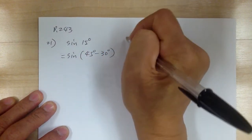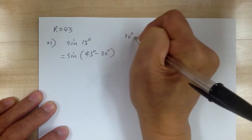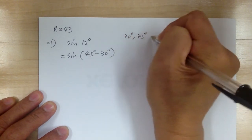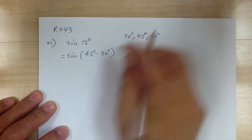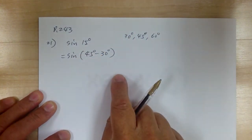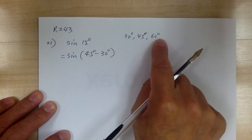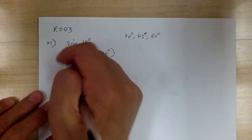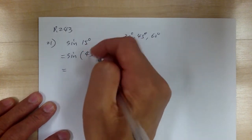You want to use a combination of the angles that you know, which are the 30s, the 45s, and the 60s. So you use a combination of these to get that. In other words, you can use 45 minus 30, or you can use 60 minus 45 — either way. Then after that, you can use your identity.